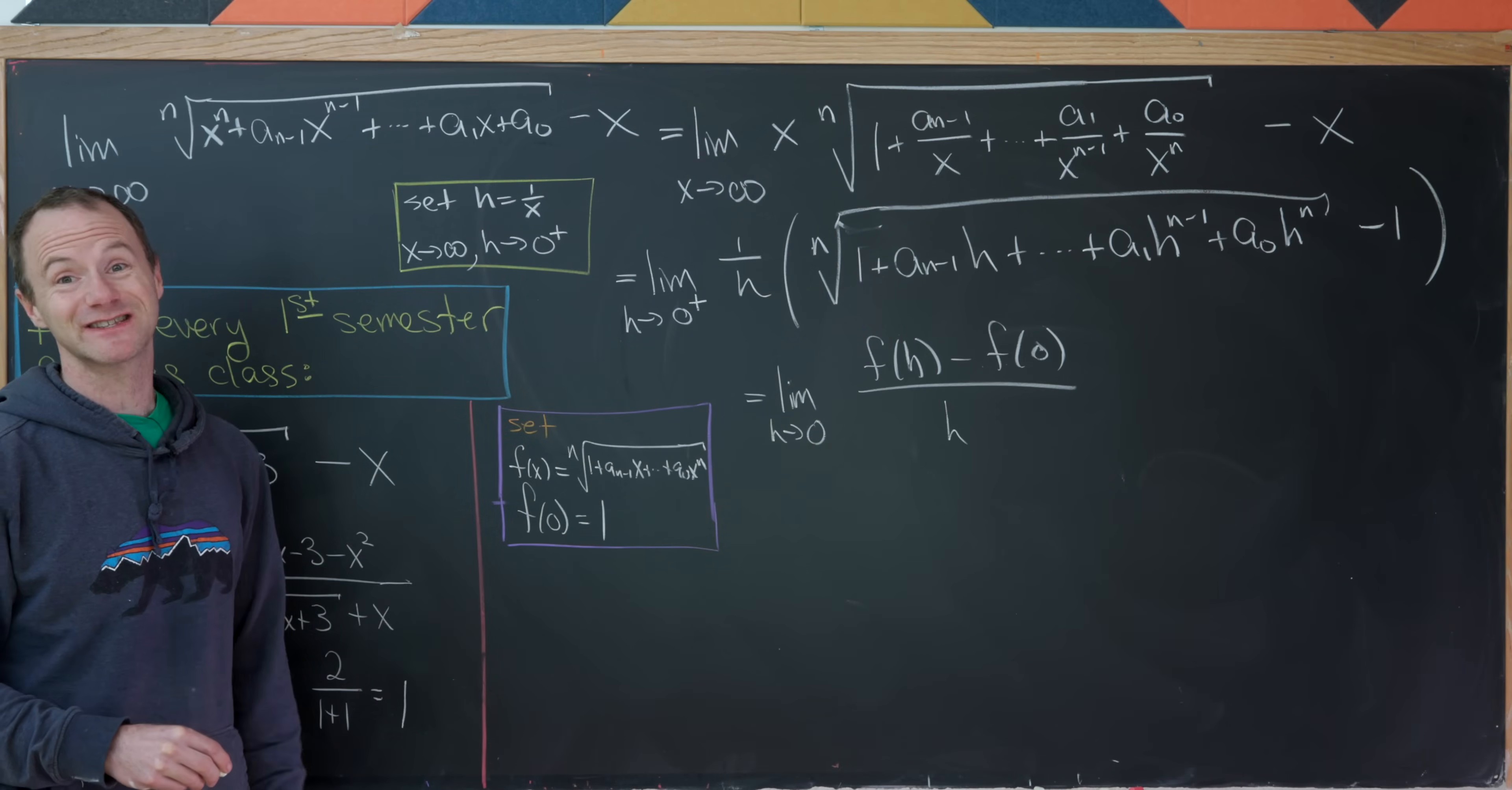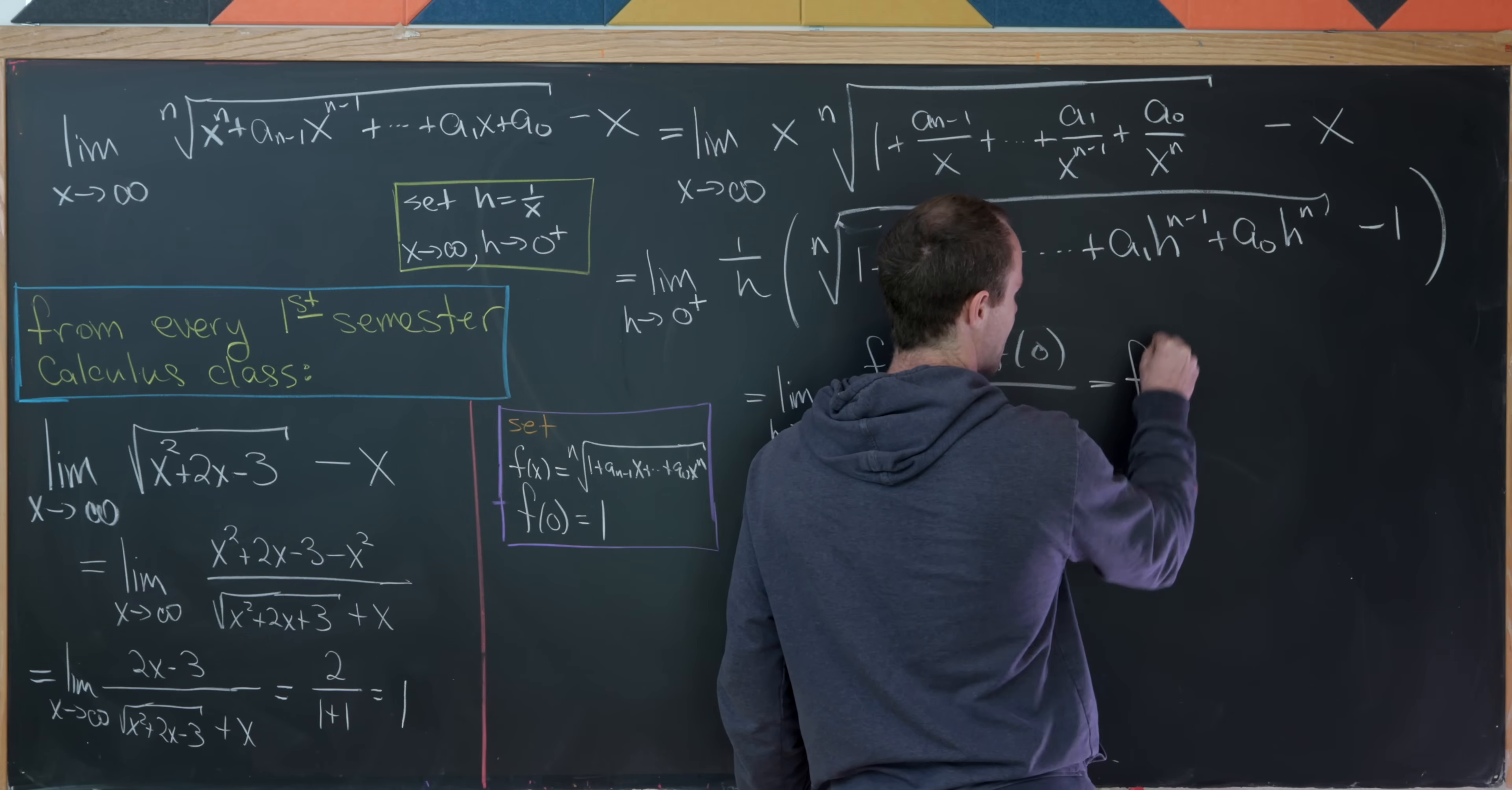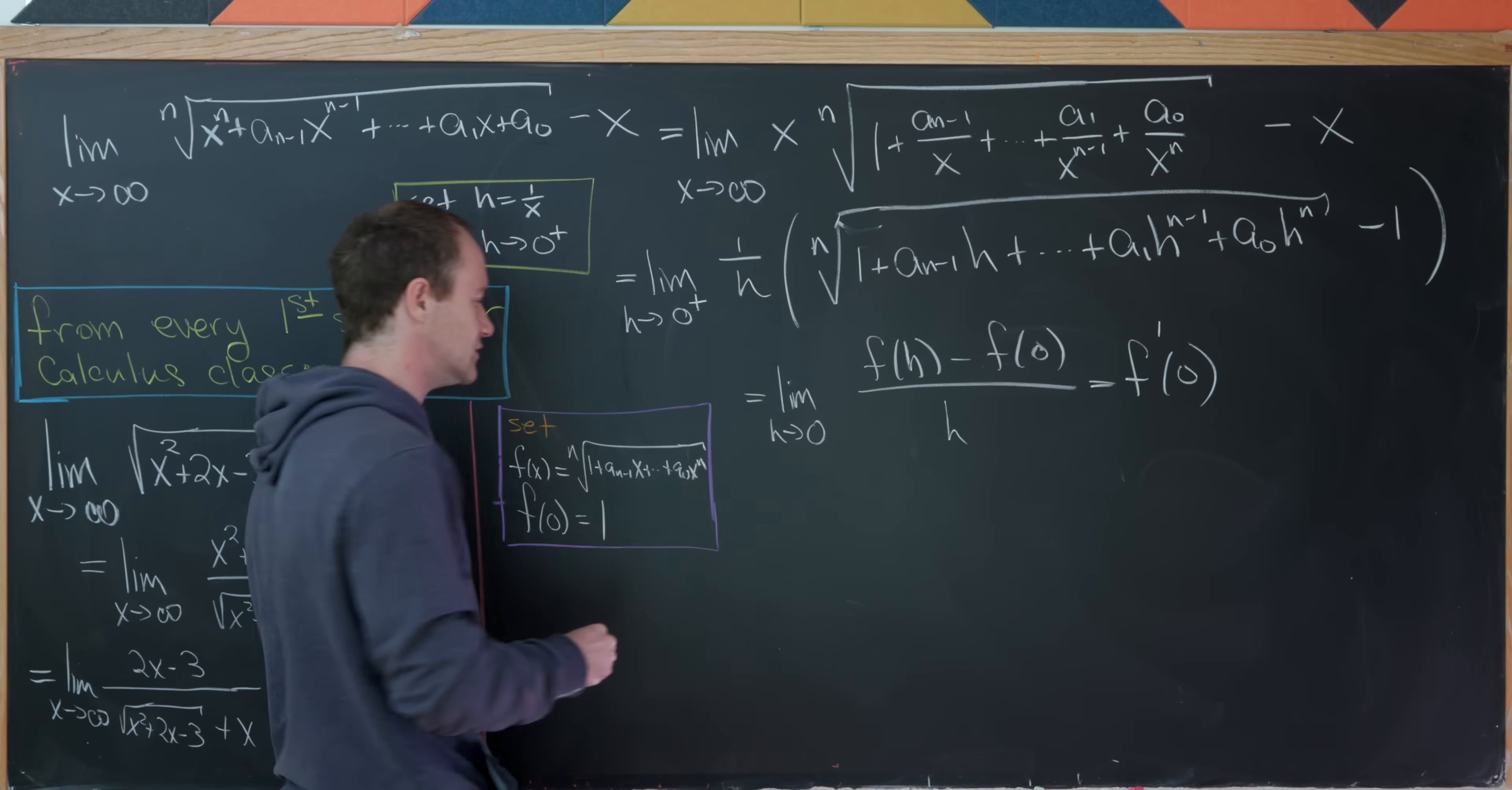Oh, but now that looks exactly like the limit definition for the derivative of f evaluated at 0. In other words, we have this is f prime of 0. But now we can just calculate the derivative of f and evaluate that at 0 because we know some derivative rules. So let's do that.